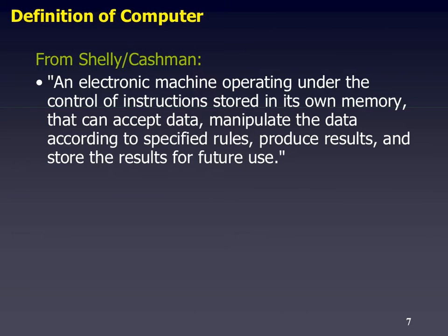So, a computer has been around for a very, very long time. Shelly Cashman defines it as simply an electronic machine: it receives instructions, stores them in memory, accepts data, manipulates the data, produces results, and stores those results. A simple process — it might seem quite simple to anyone.